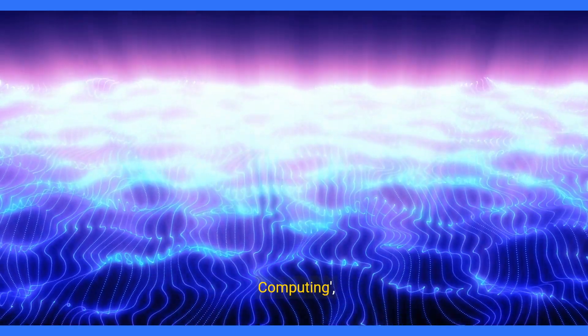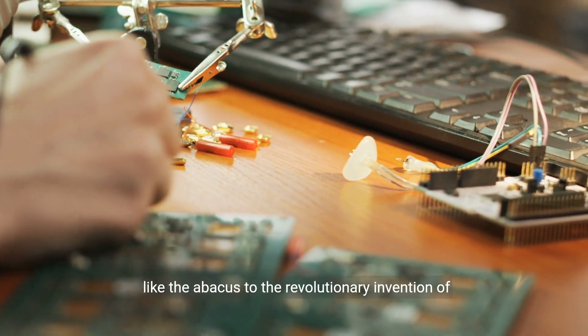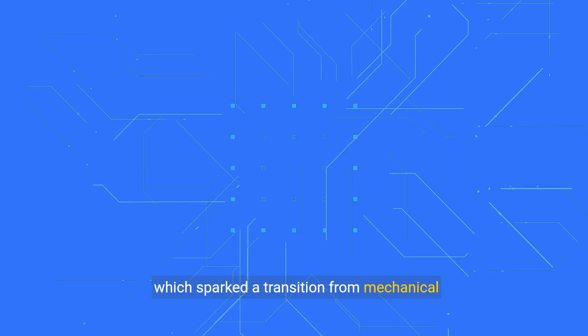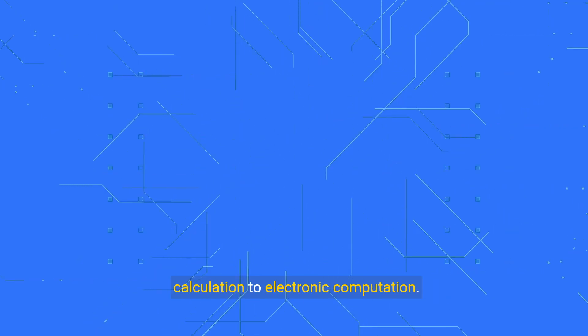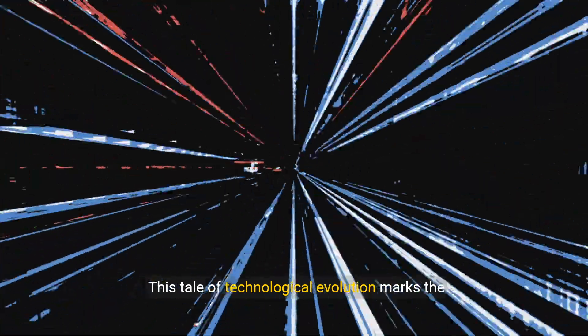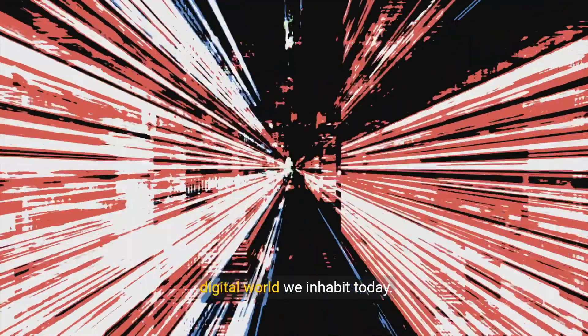Embarking on a journey through the dawn of computing, we traverse a path from the early mechanical devices like the abacus to the revolutionary invention of the transistor, which sparked a transition from mechanical calculation to electronic computation. This tale of technological evolution marks the progression from simple devices to the complex digital world we inhabit today.